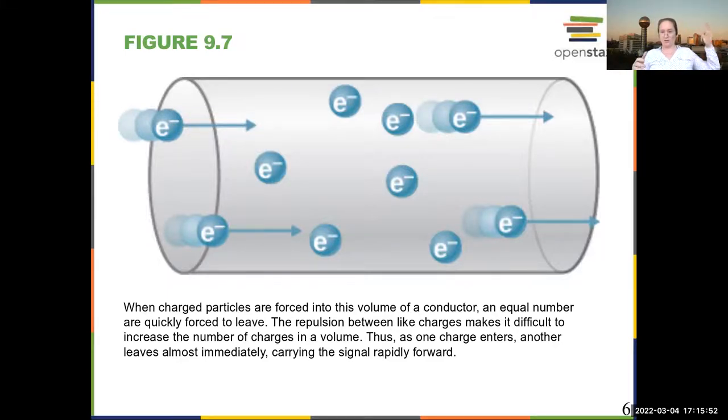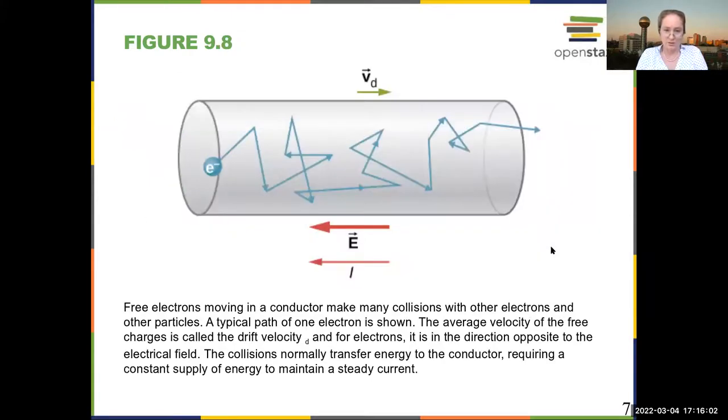But this is how the signal is transmitted. What really happens is that as the electrons travel through the wire, they're actually going to suffer collisions.